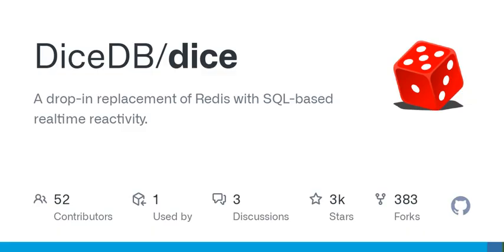DiceDB is multi-threaded and follows a shared-nothing architecture. It supports a new command called Q-Watch, allowing clients to listen to a SQL query and receive real-time notifications of changes.